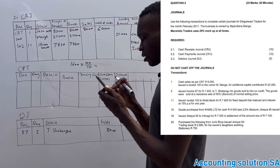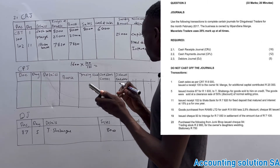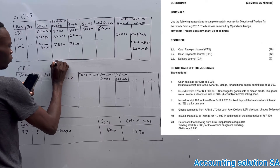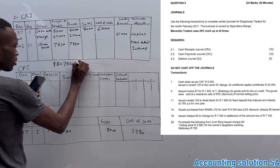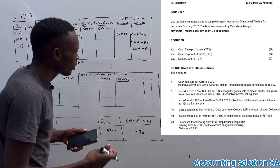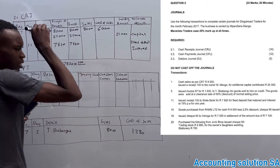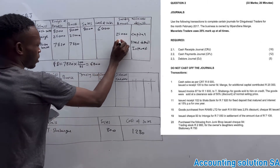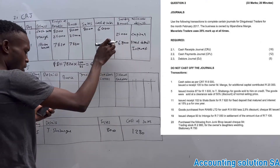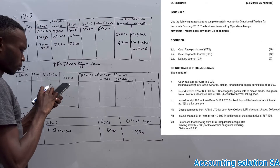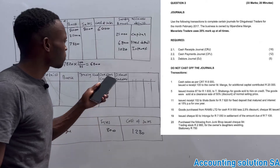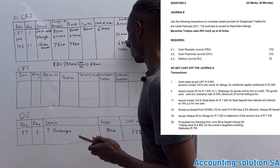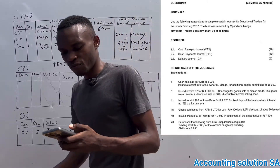The calculation to separate fixed deposit from interest: 7,820 multiplied by 100 over 115 gives us 6,800 for the fixed deposit. Then interest is 7,820 minus 6,800 which gives 1,020. Interest must always be lower than the fixed deposit amount. If you split them like this you are going to get four marks, which is a lot of marks.